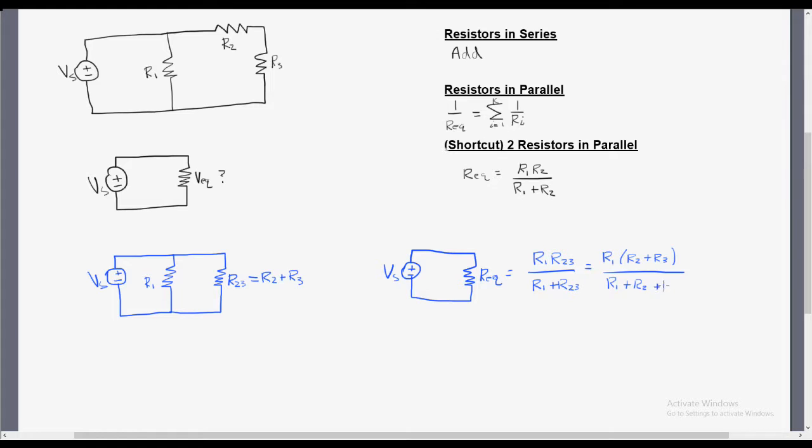final form for the equation, which is R1 multiplied by R2 plus R3, all over R1 plus R2 plus R3.